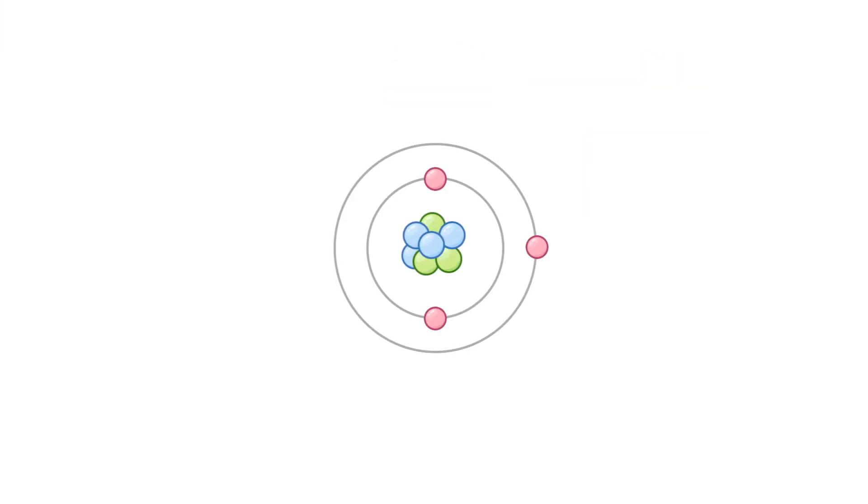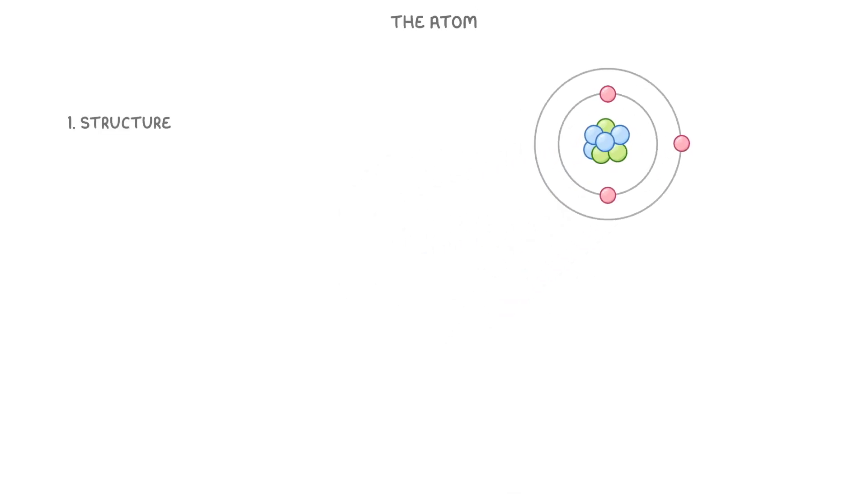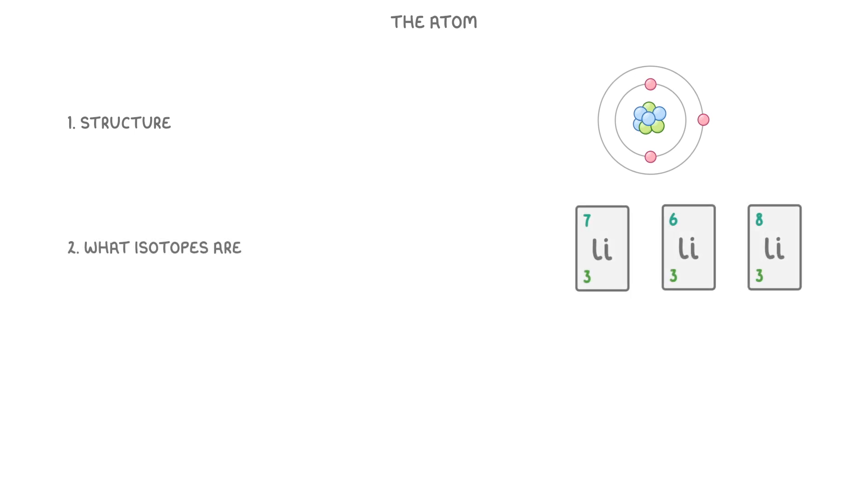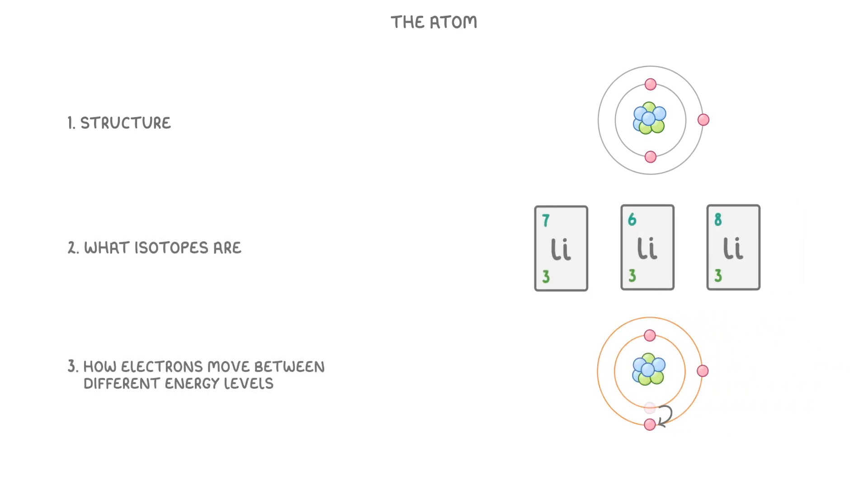In today's video, we're going to do a quick review of everything that you need to know about the atom from chemistry, like its structure and what isotopes are. We'll also look at how electrons can move between different energy levels.